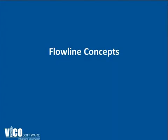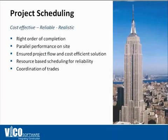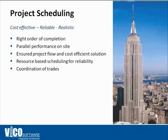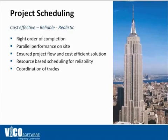Flowline is actually not something new. It was used in building the Empire State Building, which was built in just a little over one year. The builders had to manage thousands of people on a very tight site. They basically drew Flowline on paper with pencil, and it helped them ensure continuous flow and efficiently utilize the tight site and locations during construction.